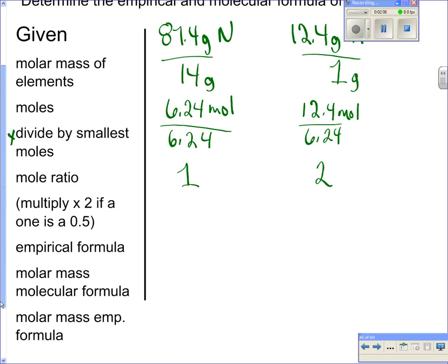But in this case, I don't need to do that. And so all my empirical formula is, is I now take that subscript, while I don't write a 1, and then I have hydrogen with a 2, and that is my empirical formula.